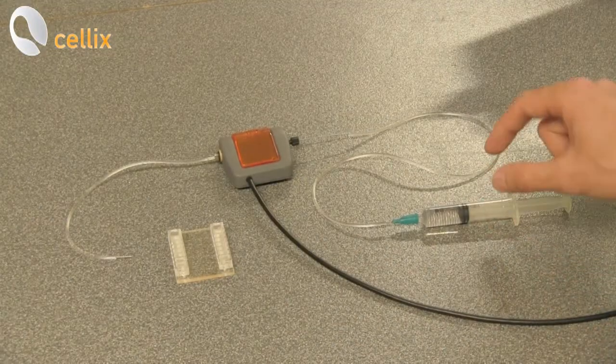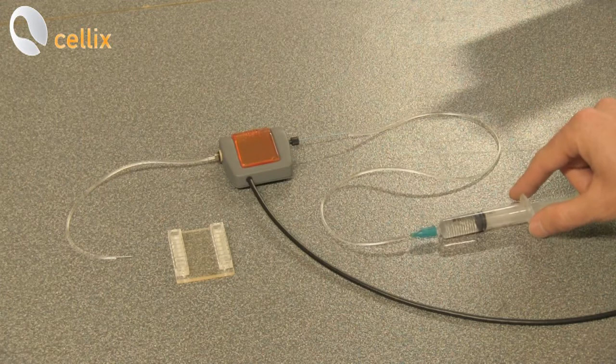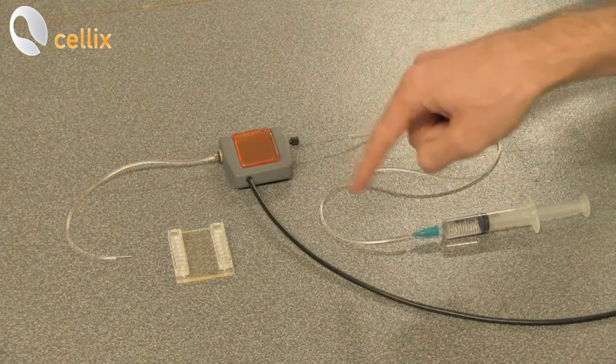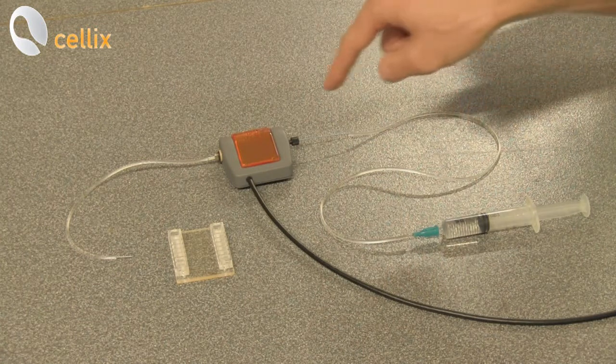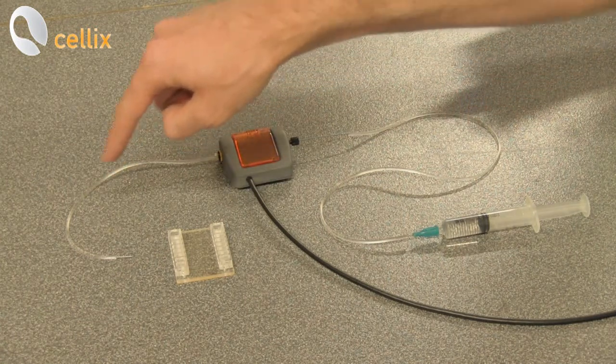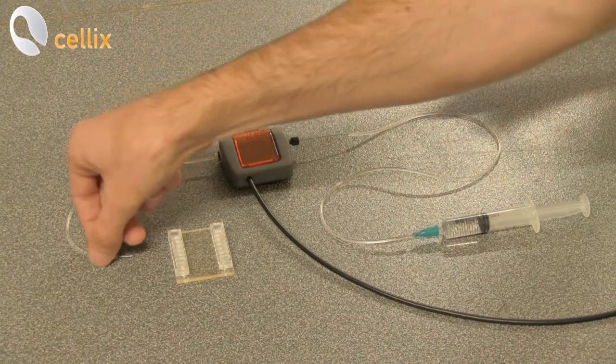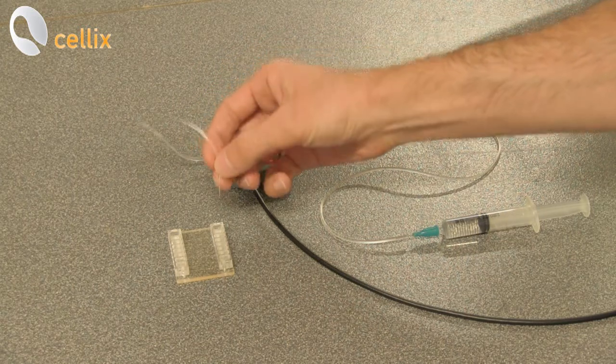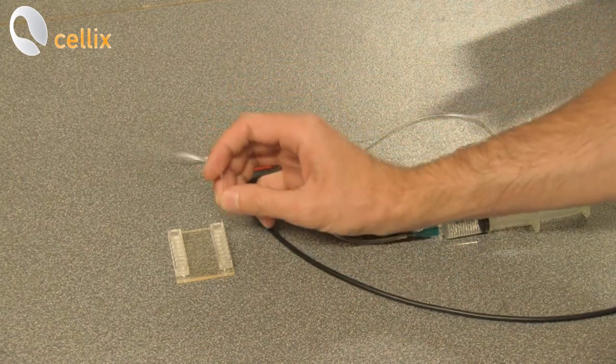The syringe is connected to the Exigo sensor using a Tygon tubing. This is the inlet cable of the sensor. The same thing it is for the outlet. This is the outlet tubing of the sensor. We have a special needle here. We can plug this in into the inlet of the biochip.